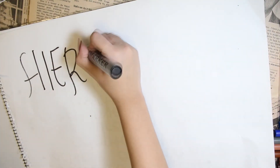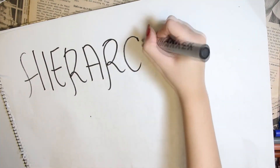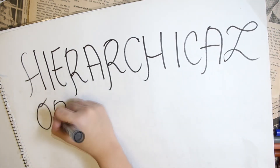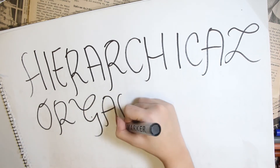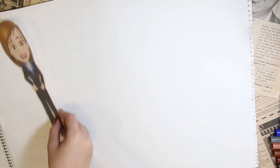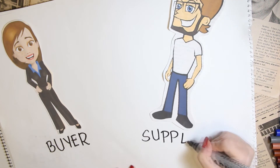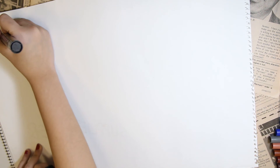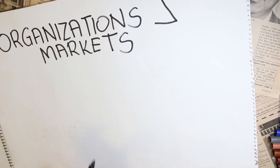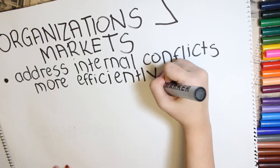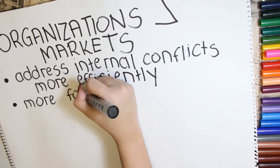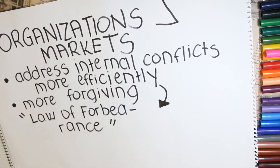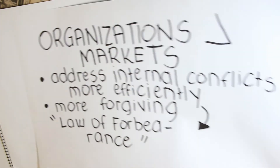Moving on to hierarchical organizations — it's not different from the concept of hierarchy discussed in bureaucratic management by Max Weber. But in this case, it's not the people that are placed under the hierarchy; rather, it's the responsibilities and duties. The buyer and suppliers are no longer two different entities. One of the advantages of organizations is that they can handle conflicts more efficiently than the market. To establish efficient handling of conflicts, the organization could be more forgiving than the market — this is what Williamson calls the law of forbearance. Members of the organization know that not all mistakes will be harshly punished.